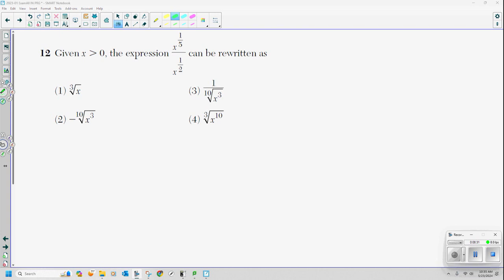Guys, guys, guys! Know your rules for exponents. This is simple. Given that x is greater than zero, the expression x^(1/5) over x^(1/2) can be rewritten as. I've just got to work some magic here. I'm going to get rid of that fraction. And there are a couple ways you can do this. But this is the way that I am going to do it.